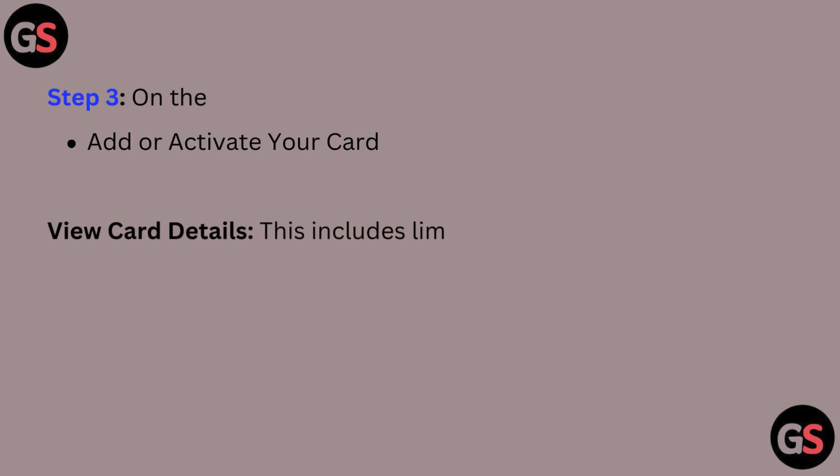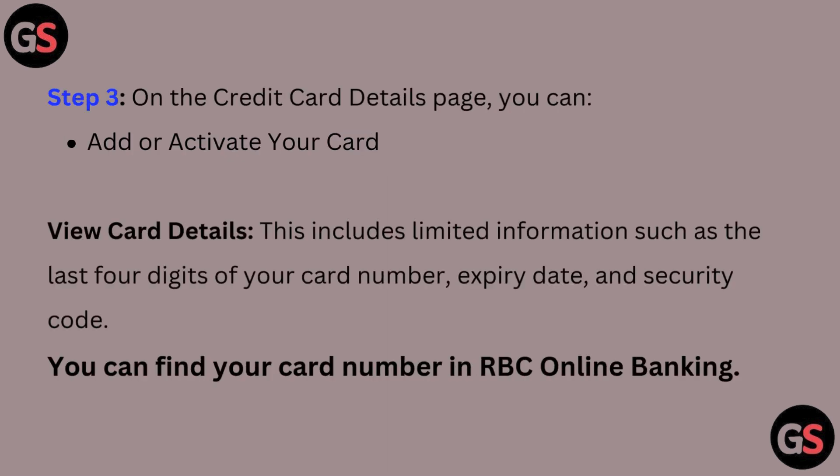Step 3: On the credit card details page, you can add or activate your card, or view your card details. This includes limited information such as the last four digits of your card number, expiry date, and security code.